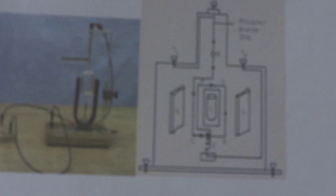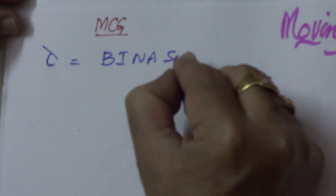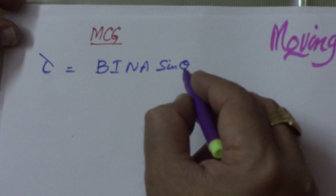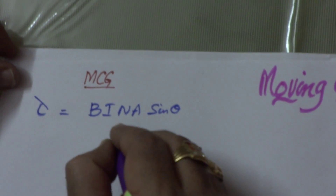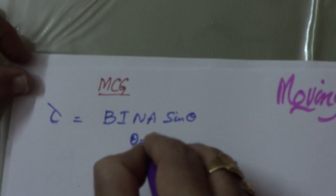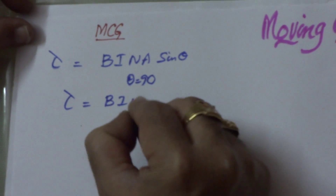Now let's go through the derivation. If I is the current passing through it, B is the magnetic field, and N is the number of turns, then the torque produced — torque tau is equal to B I N A sin theta, where theta is the angle between the area vector and magnetic field B. Now as we have created the radial magnetic field, theta becomes 90. When theta becomes 90, torque is equal to B I N A.